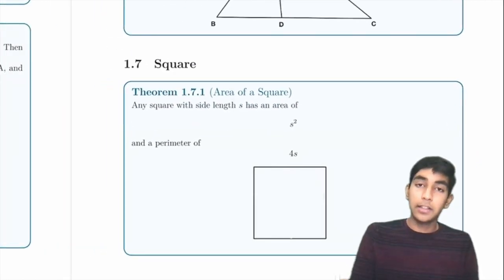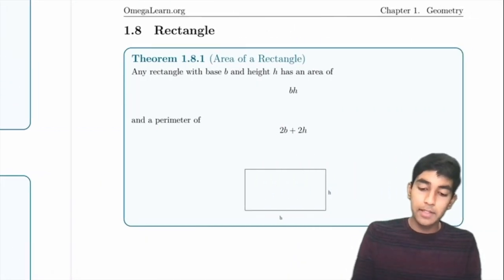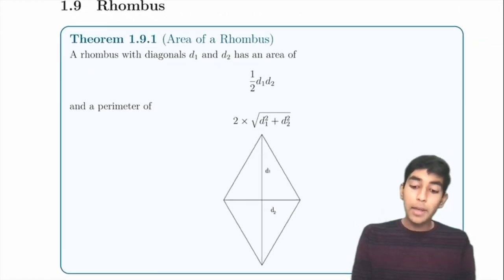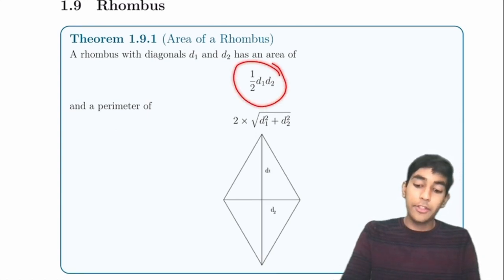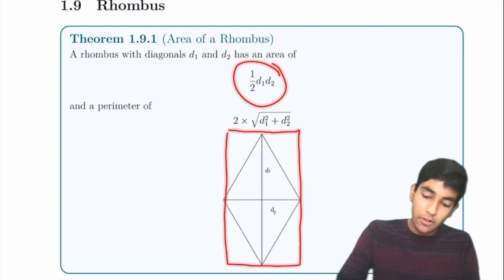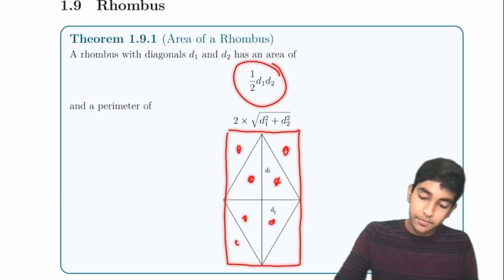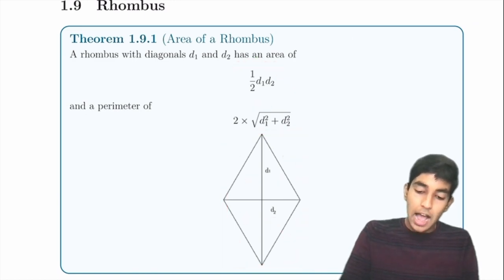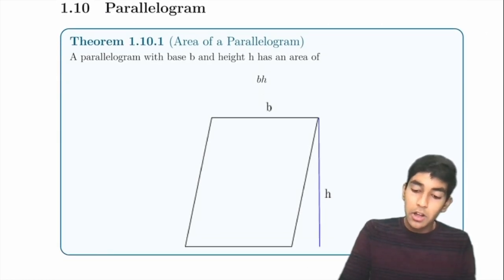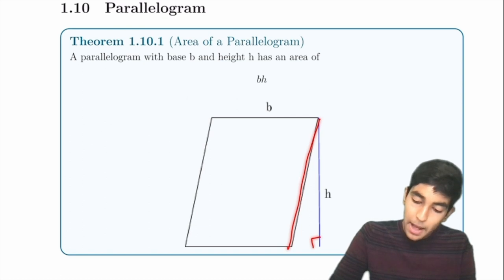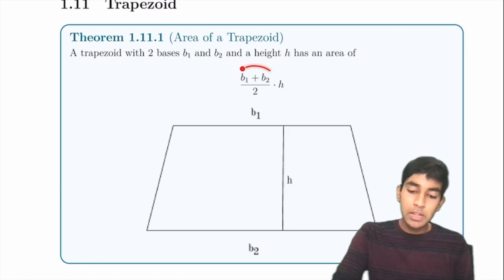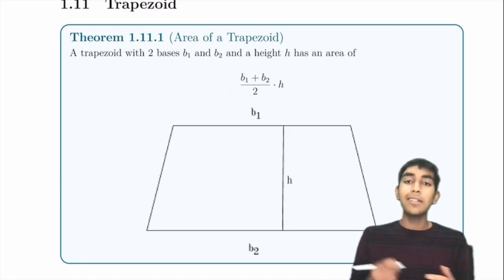A square has area = side², perimeter = 4 × side. A rectangle has area = base × height, perimeter = 2(base + height). A rhombus has area = (1/2) × product of diagonals. A parallelogram has area = base × height — remember the height is perpendicular to the base, not the slant side. A trapezoid has area = (B₁ + B₂)/2 × H, the average of the bases times the height.